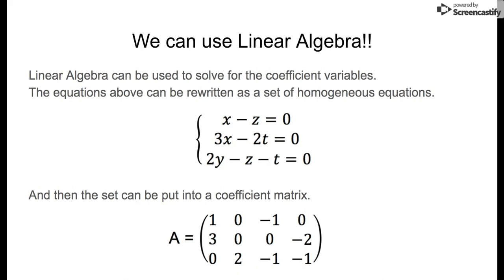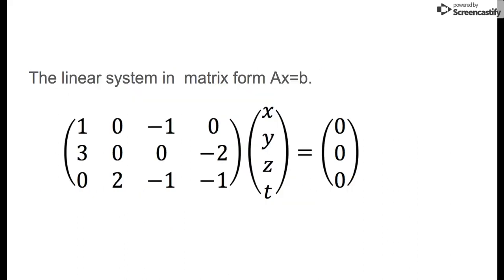The last row we have zero x's, two y's, negative one z's, and negative one t's. With the coefficient matrix, we can plug it into the linear system in matrix form Ax = b, where x, y, z, and t are the variables we're going to solve for.